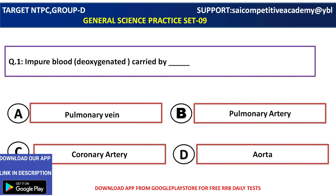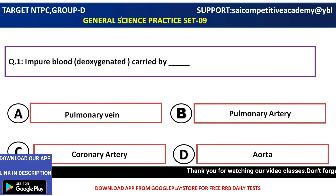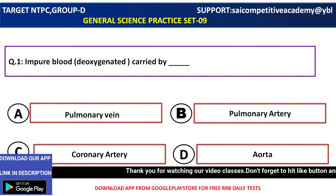The first question is: impure blood carried by — deoxygenated blood is not impure blood. How does it carry? The answer is pulmonary artery.